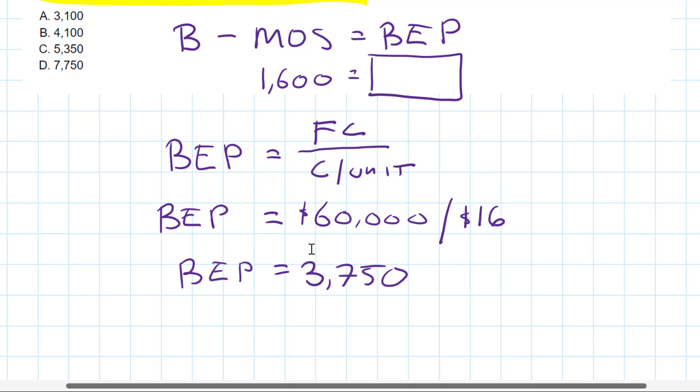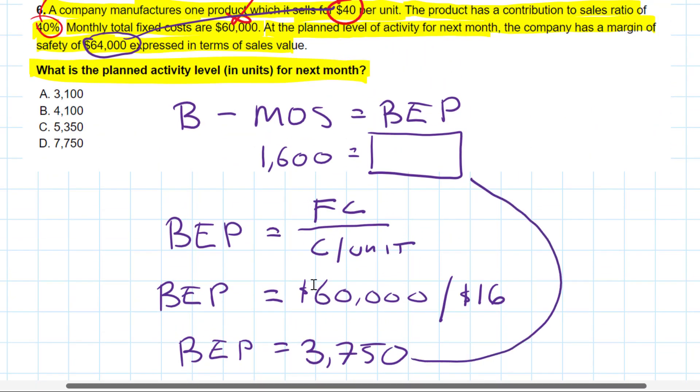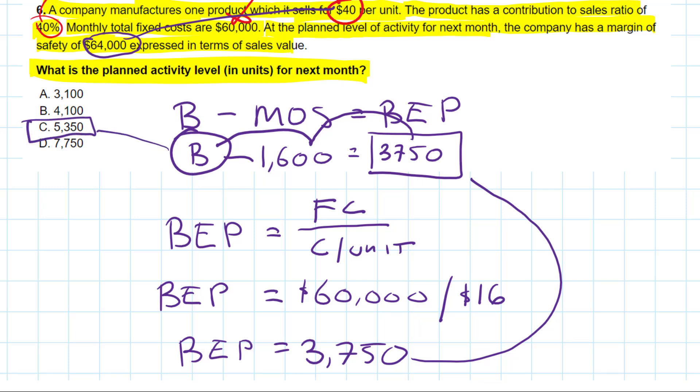So guys, we're almost there. If we plug the 3,750 into that first formula, we know that B minus this is equal to the 3,750. And as we just practiced in the previous video, to isolate the B, we've got to add the 1,600 to each. So 3,750 plus 1,600, well, that's going to be equal to 5,350. Once again, 3,750 plus 1,600 will be equal to the B. And that comes to 5,350. Answer is C.